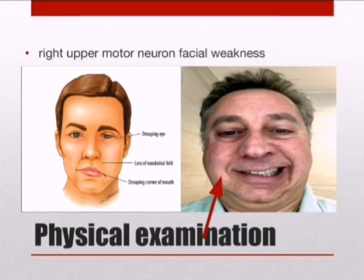This is called upper motor neuron facial weakness, as it is caused by damage to the upper part of the brain. In contrast, lower motor neuron weakness is caused by a lesion in the facial nerve or facial nerve nucleus, which leads to complete hemifacial weakness — not just mouth droop as in our patient. In lower motor neuron facial palsy, there is mouth droop, asymmetrical nasolabial folds, and loss of forehead wrinkles.